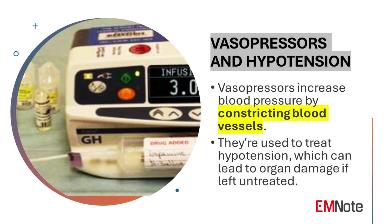Vasopressors and Hypotension. Vasopressors are a class of medications that act by inducing vasoconstriction, effectively raising blood pressure. Their primary use is in the treatment of hypotension, a dangerous condition characterized by low arterial blood pressure and inadequate organ perfusion. Left untreated, hypotension can result in severe organ damage or even death. Vasopressors work to counteract this by increasing vascular tone and improving blood flow to vital organs.